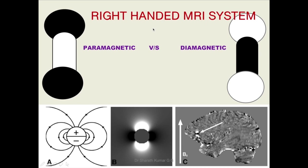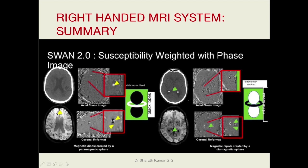As mentioned earlier, right-handed systems are commonly used. Paramagnetic substances like blood products have a torus which is white and a dumbbell which is black on reconstruction images. Diamagnetic substances have a torus which is black and a dumbbell which is white. In summary, areas of blooming on susceptibility-weighted magnitude image with corresponding axial and coronal reformatted images showing a white torus and black dumbbell indicate a paramagnetic substance.